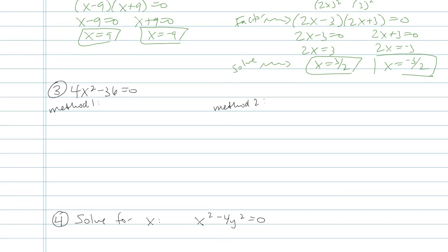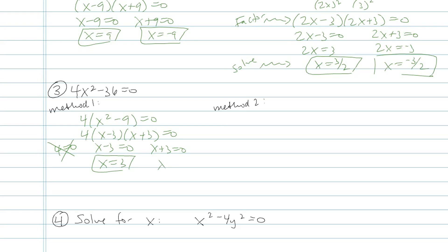Let's try another one: 4x squared minus 36 equals 0. If you're a pretty advanced factorer, you'll notice right away there's a greatest common factor of 4, so you can factor that out and then use difference of perfect squares. When doing the zero product property, you set each factor equal to 0. When you get 4 equals 0, that doesn't make sense and doesn't help find x, so you can cross that out. Method two: if you didn't see the greatest common factor but recognized it as a difference of perfect squares, you could factor it as 2x minus 6 times 2x plus 6, use the zero product property, and get the same answer: x equals 3 and x equals negative 3.